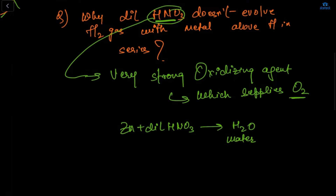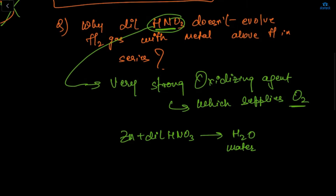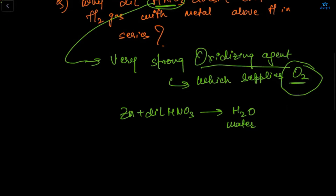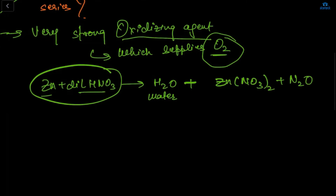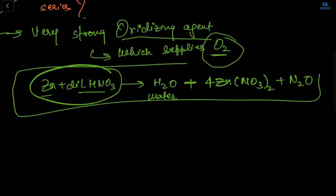When zinc reacts with dilute HNO₃, water forms instead of H₂ because HNO₃ is a strong oxidizing agent. The other products are Zn(NO₃)₂ and N₂O. If we balance this, we get 4 Zn(NO₃)₂ and N₂O as the other product of this reaction.